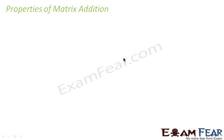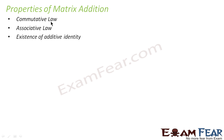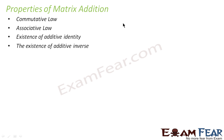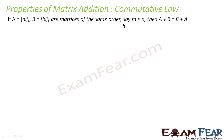Now we will go through the properties of matrix addition. There are four properties: commutative law, associative law, existence of additive identity, and existence of additive inverse. For any addition, these properties are true, and for matrix addition also these properties are true. We will explain all of them.